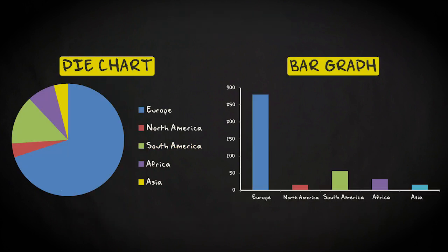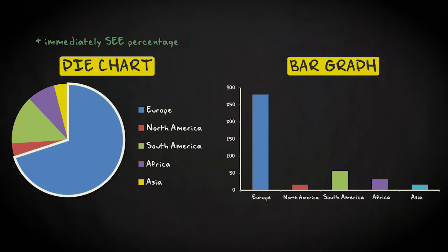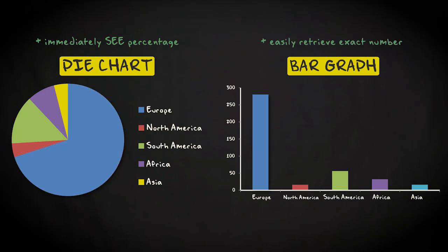Both types of graphs have advantages and disadvantages. An advantage of the pie chart is that you can see immediately that about 75% of the players come from Europe. You cannot discern that information that easily from the bar chart without making a few calculations. On the other hand, the exact number of players in each category is not easily retrieved from a pie chart, while in a bar chart you can see easily, for example, that a little over 50 players come from South America.